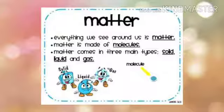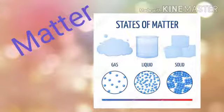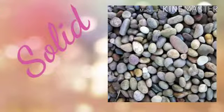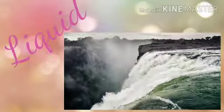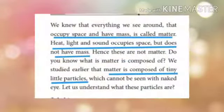In our world, or in the universe, we are surrounded by matter. Matter is in the form of solid, liquid, and gaseous states. For example, solid matter includes stone, liquid matter includes water, and gaseous form is seen when we burn camphor — it evaporates into a gaseous state. These are the three states of matter.